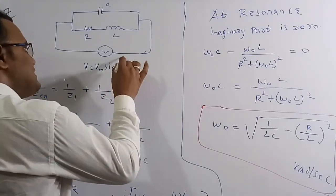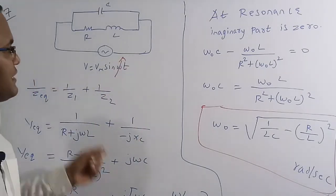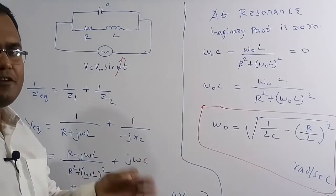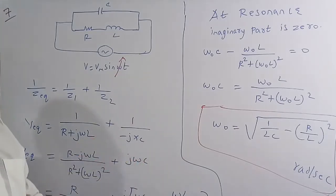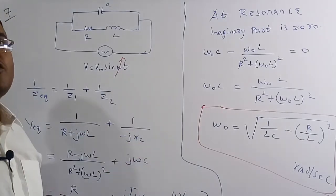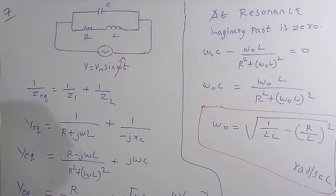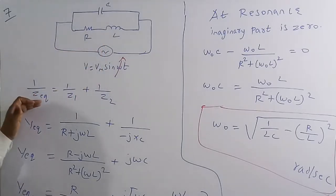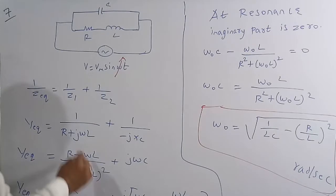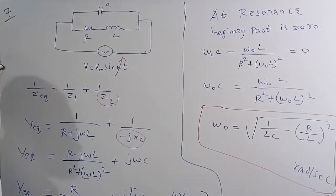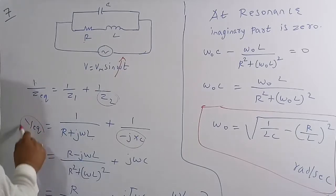At resonance, as we change the frequency, at a particular frequency the whole circuit behaves like a pure resistive circuit — supply voltage and supply current are in phase and current is maximum. That frequency is the resonant frequency. For this parallel circuit: 1/Z_eq = 1/Z1 + 1/Z2, where Z1 = R+jωL and Z2 = −jX_C = −j/ωC.